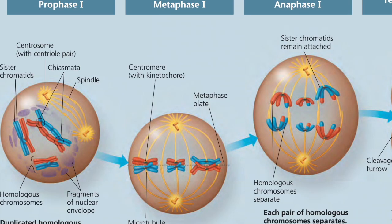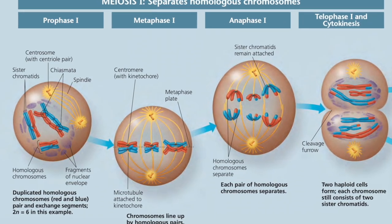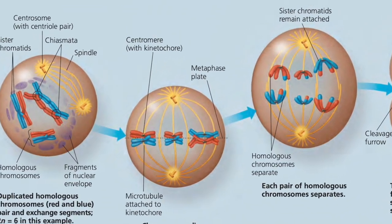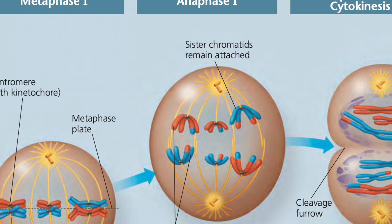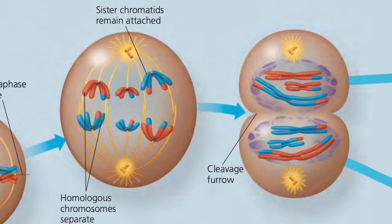Crossing over happens to all of the chromosomes, with a minor exception for the X and Y chromosomes. In metaphase 1 of meiosis 1, another difference from mitosis emerges: rather than chromosomes lining up in single file, homologous chromosomes line up as a pair at the metaphase plate. This means that during anaphase 1, we don't have separation of sister chromatids but rather separation of homologous chromosomes. As a result, the daughter cells forming during telophase 1 have homologous chromosomes that have not yet been detached.